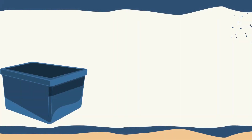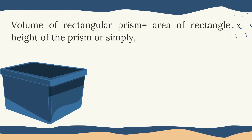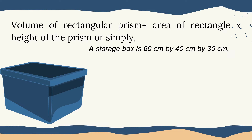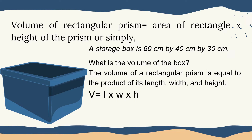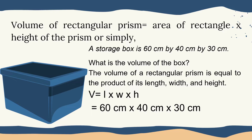From this example, ang storage box ay isang rectangular prism. So we will identify the volume. If the given storage box is 60 cm by 40 cm by 30 cm — meaning ito yung length, width, and the height. So what is the volume of the box? Using the formula, V equals L times W times H: 60 cm times 40 cm times 30 cm. 60 times 40 equals 2,400, times 30 equals 72,000 cm cubed or cubic centimeters.